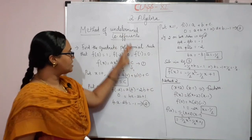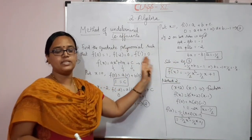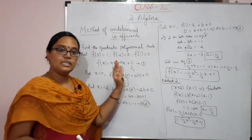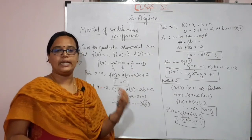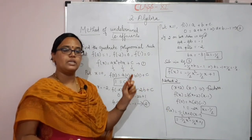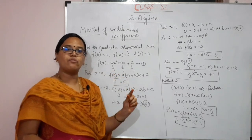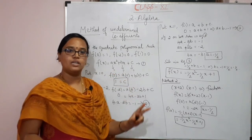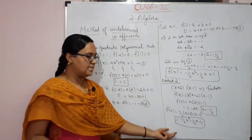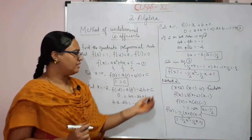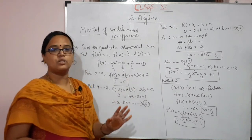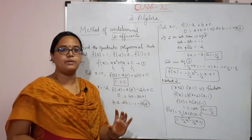This is an easy method. If the value is zero of a polynomial, we can make it a factor and represent the function in factor form. This concept makes the derivation easy, and these examples are straightforward — try all the examples.